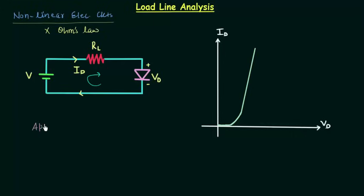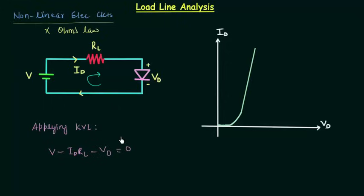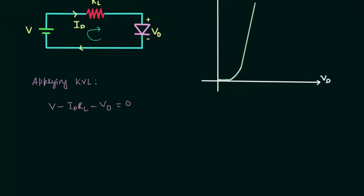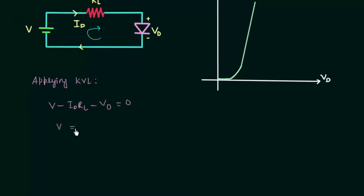By applying KVL — Kirchhoff's voltage law — we have: V minus ID·RL minus VD equals zero. Rearranging this gives us V equals ID·RL plus VD. Let's call this equation number 1.